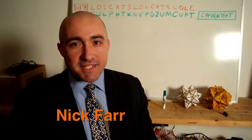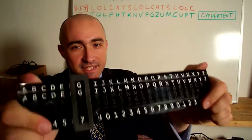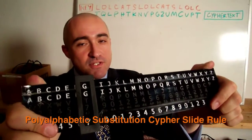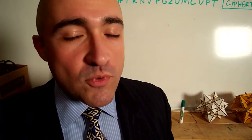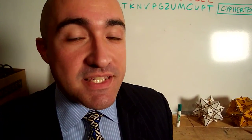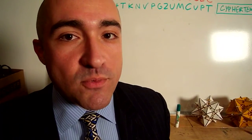Hi, I'm Nick Farr from Hack DC and this is my PASSER, Polyalphabetic Substitution Cipher Slide Rule. Slide rules like these were used in World War II to send coded messages back and forth on the battlefield. The technology behind the cipher actually dates all the way back to the Roman Empire, which is why today these kinds of substitution ciphers, where you rotate the alphabet back and forth, are called Caesar ciphers.